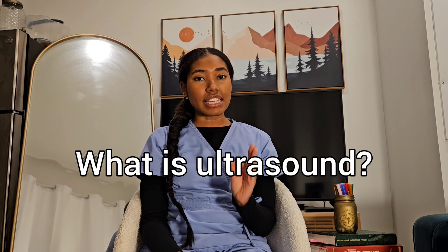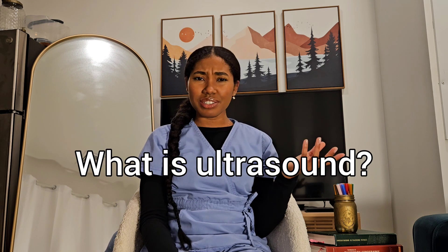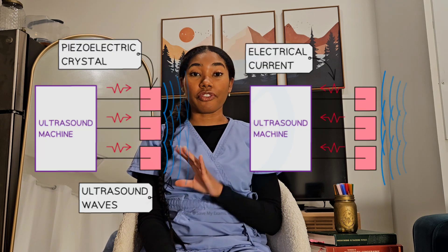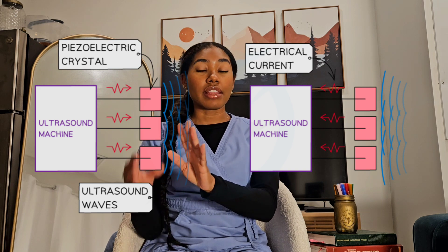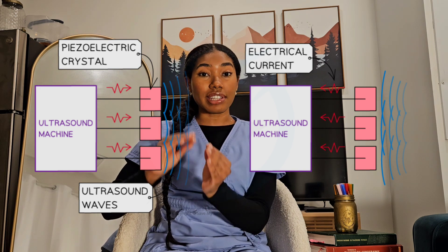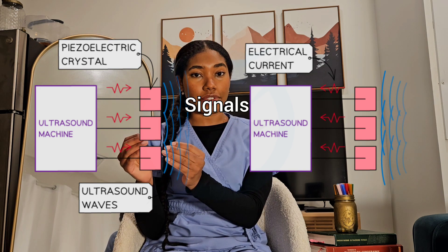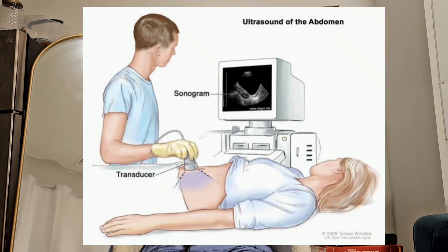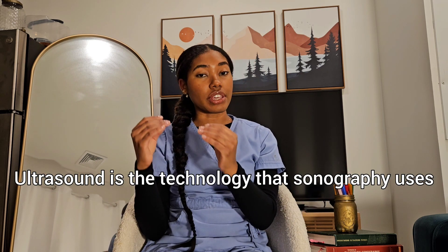So first, what is ultrasound and how does it work? The ultrasound machine sends sound waves into the body, into the tissues. The tissues reflect back those sound waves and the machine converts those sound waves into electrical signals, which are turned into an ultrasound image. A sonogram is the image produced by the ultrasound technology.